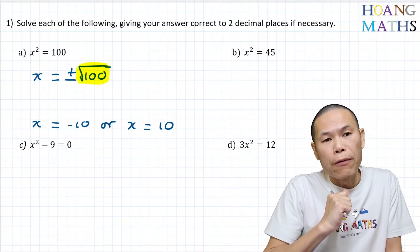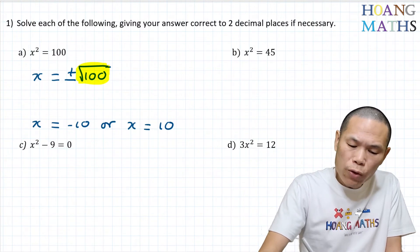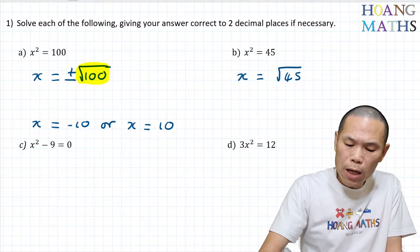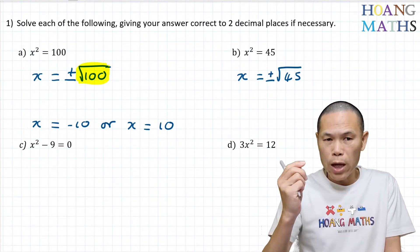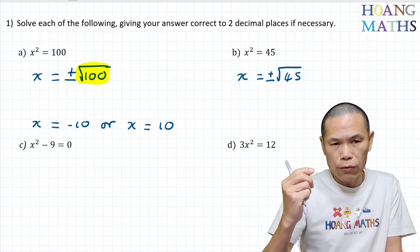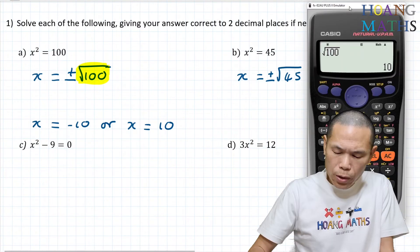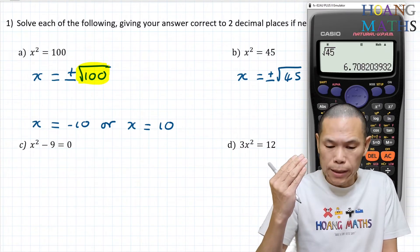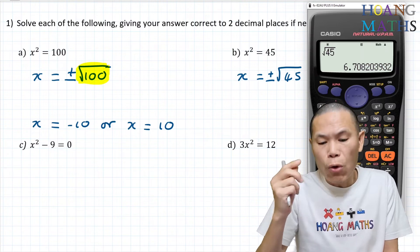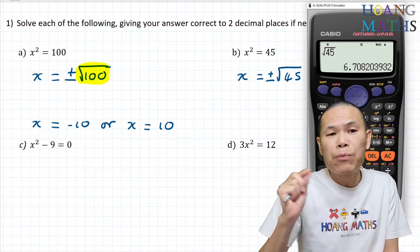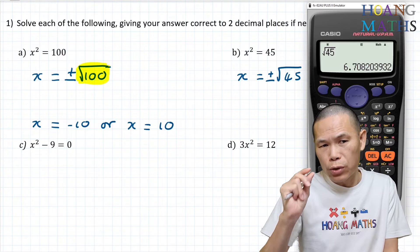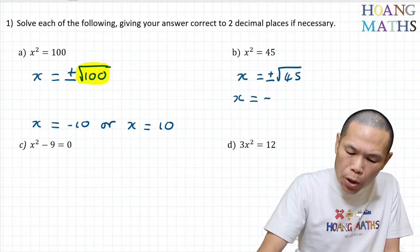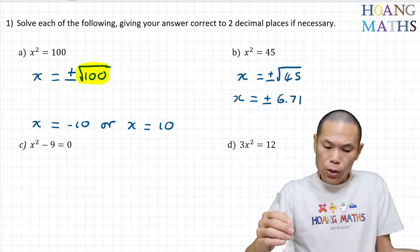Part b: x squared is 45. The opposite of square is square root, so we want to get rid of the square. Therefore x is equal to plus or minus square root of 45, because x can be either a negative or positive number. Putting that on a calculator gives 6.708. We need to correct to two decimal places: the digit after 0 is 8, which is greater than 5, so we round up — 70 becomes 71. So x equals plus or minus 6.71.